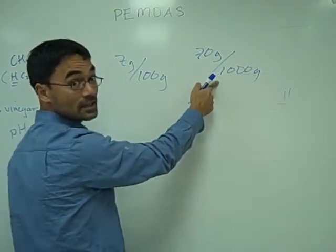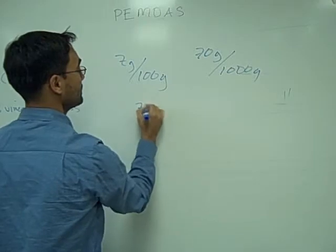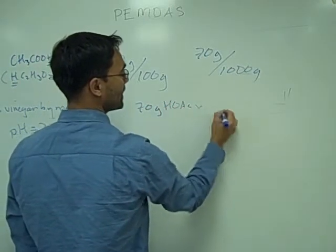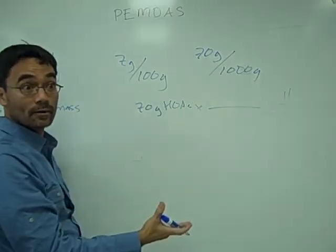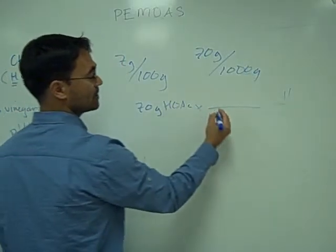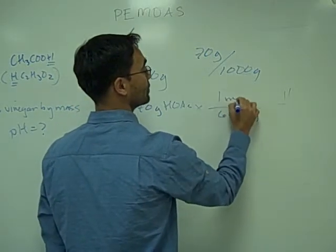which is a nice simple conversion to get us into molarity, because we know 70 grams of acetic acid would have a certain molar amount associated with it. So if we added up the components of the acetic acid molecule, we get a mass of 60.02 grams per mole.